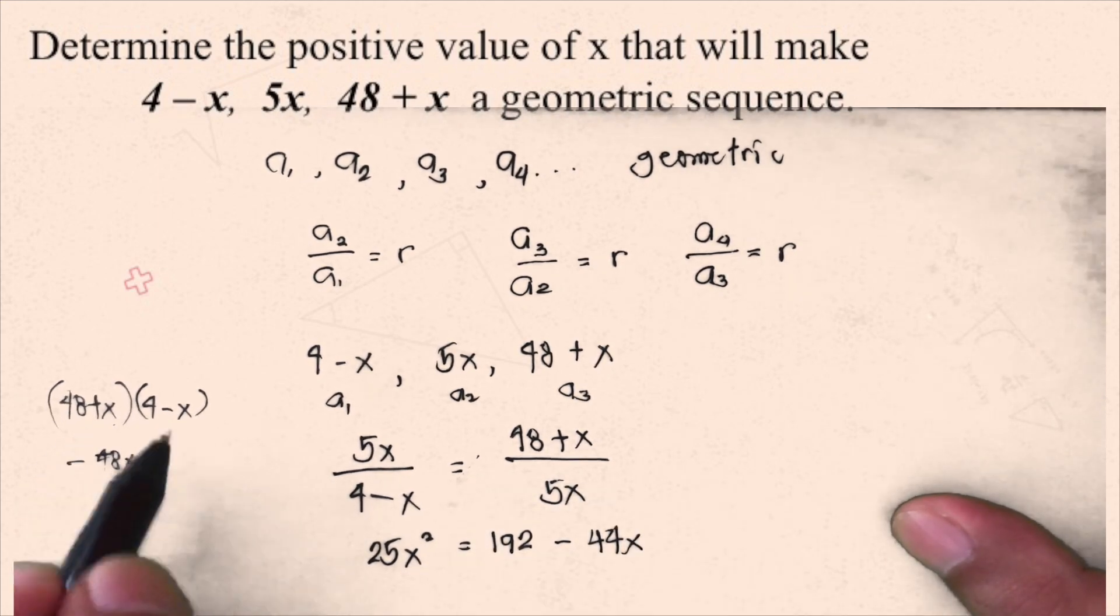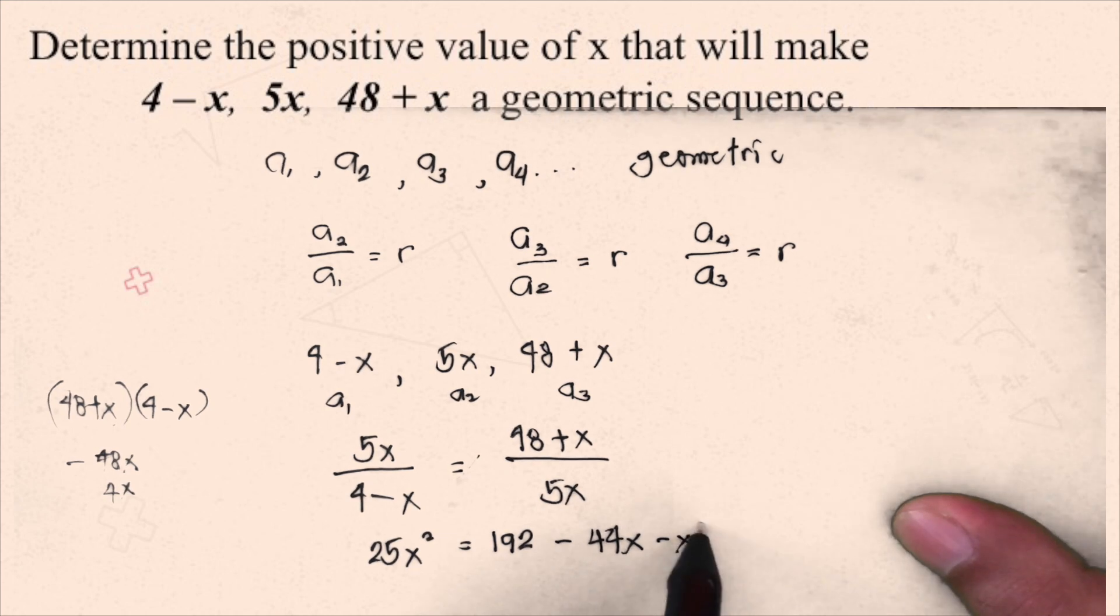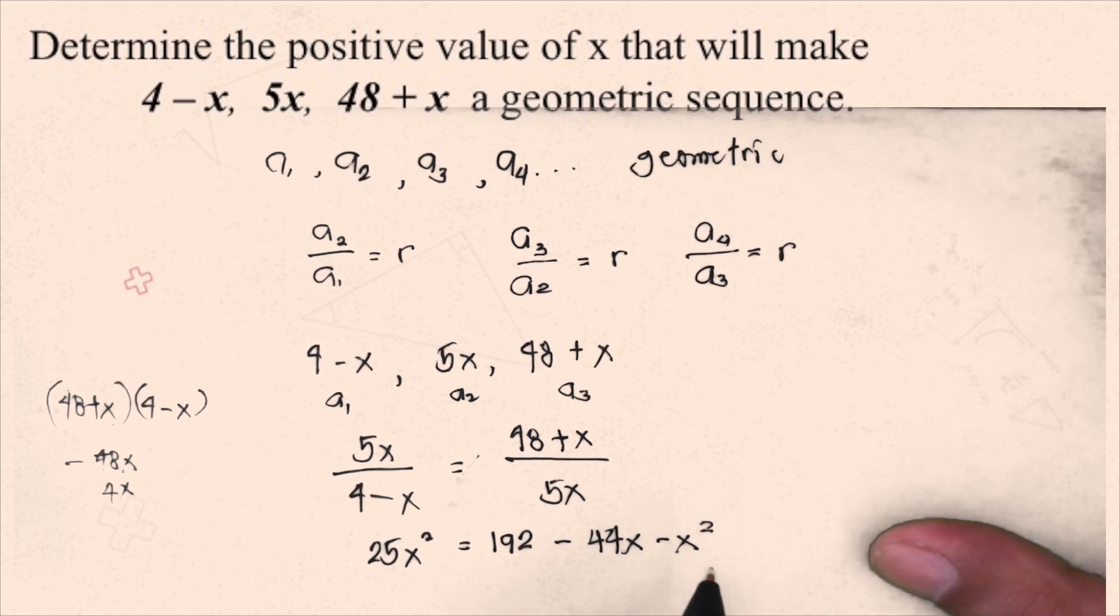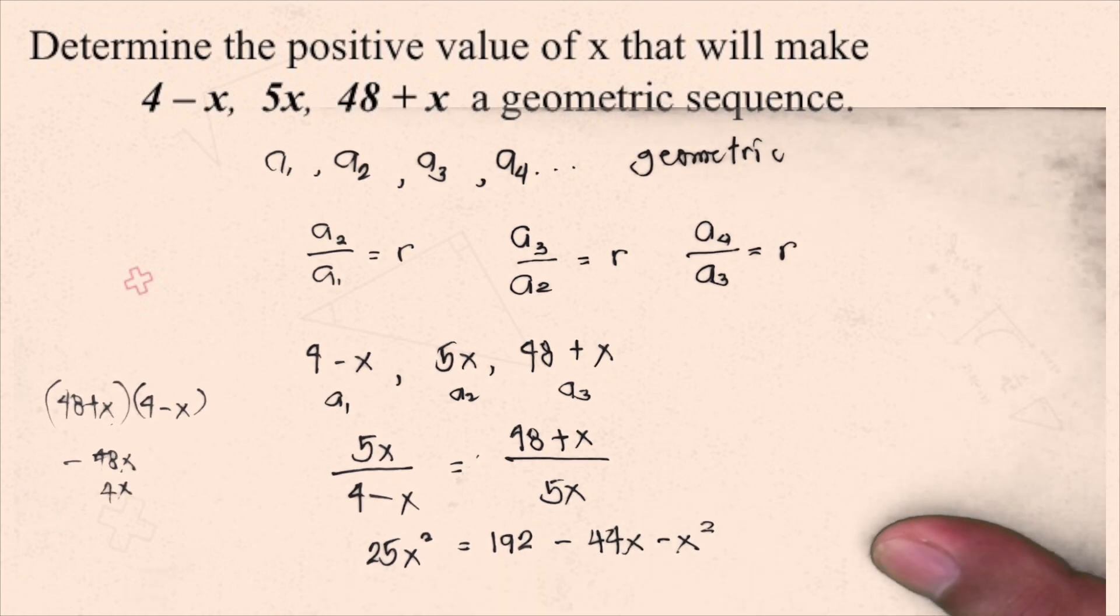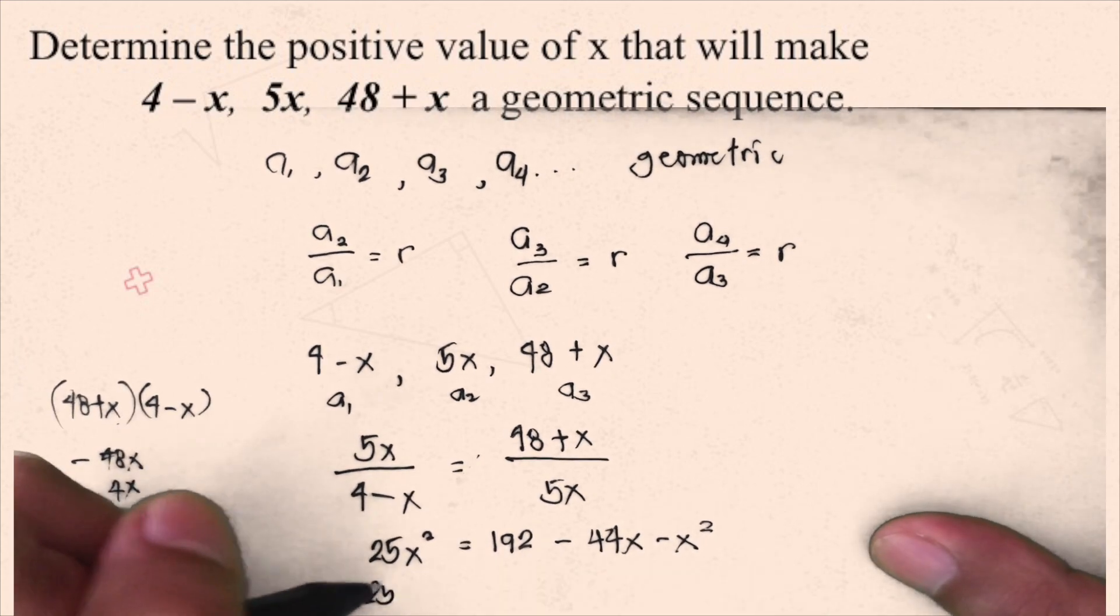And then, x times negative x is negative x squared. So, we have a resulting equation that is quadratic. We will equate that to 0 for us to factor that.